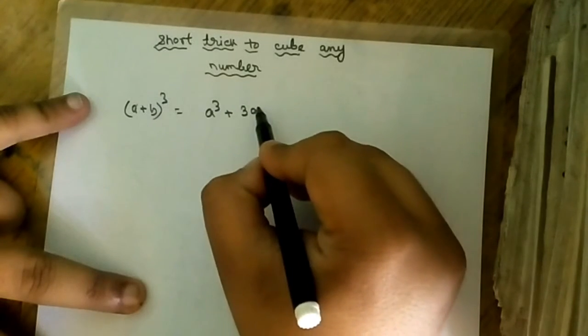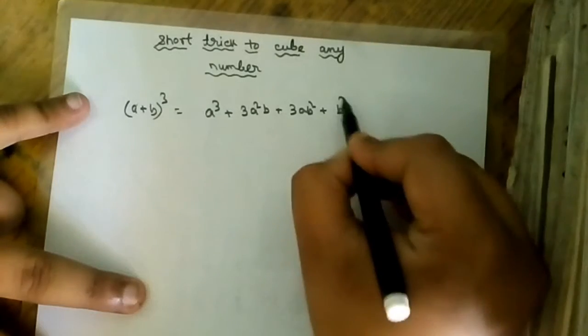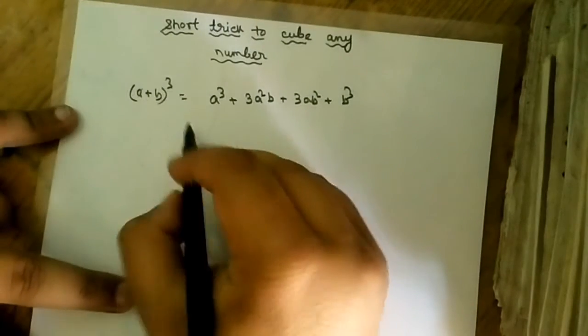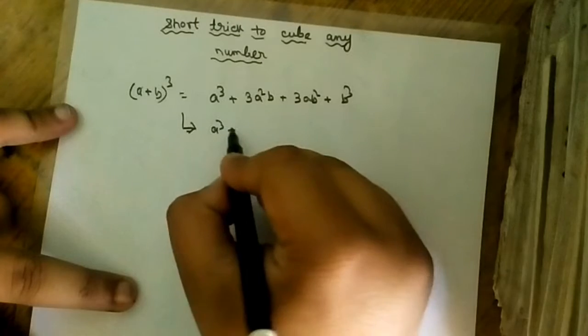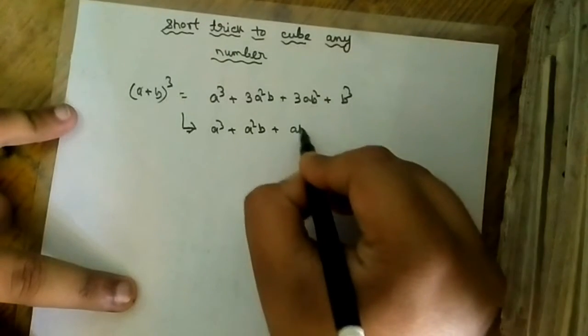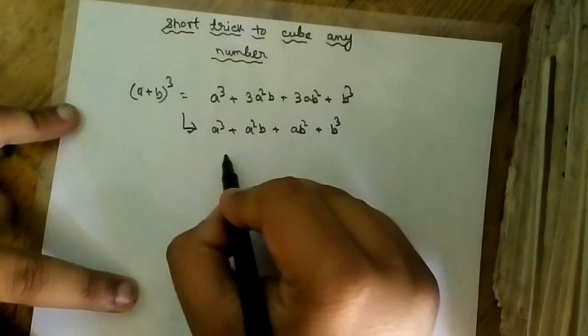3ab square, 3a square b plus 3ab square plus b cube. Now I can write this by this method that a cube plus a square b plus ab square plus b cube and in the next line I can add